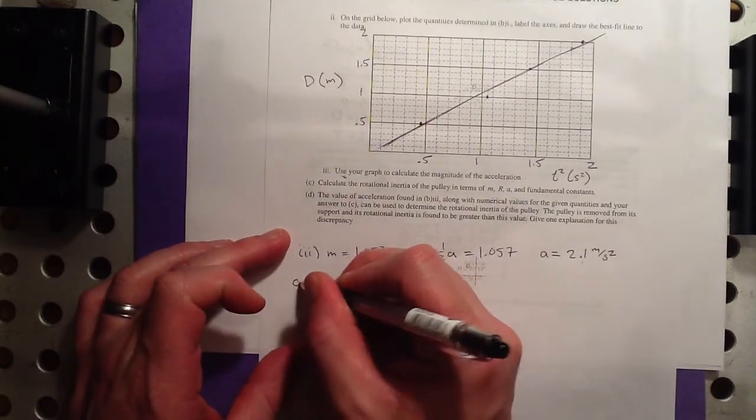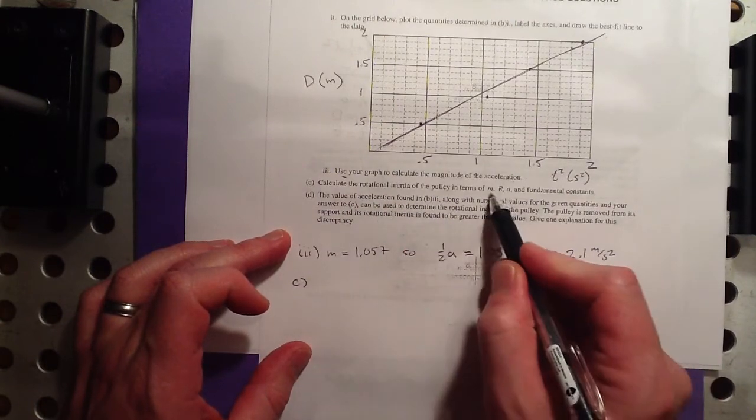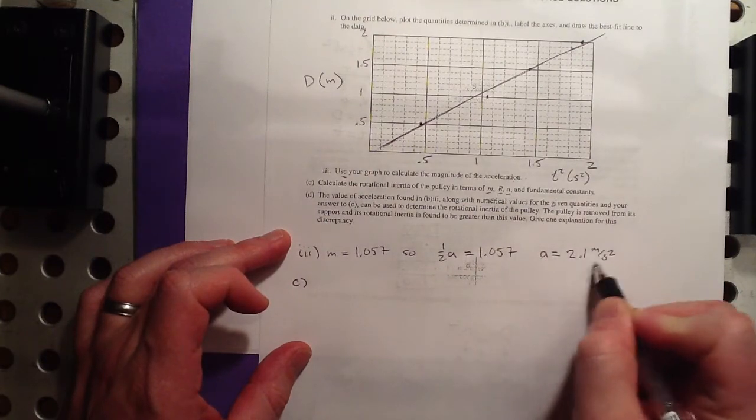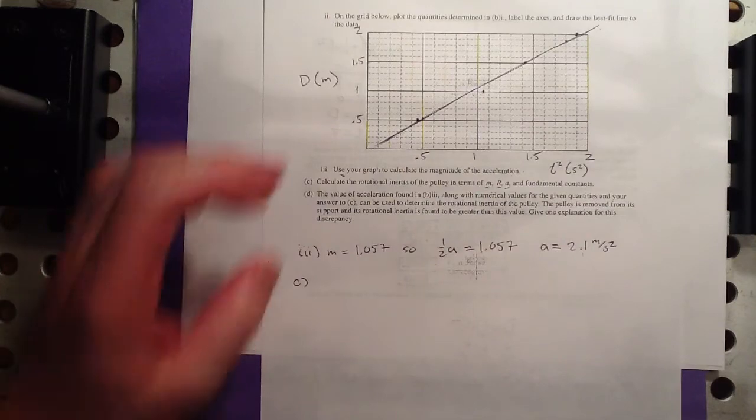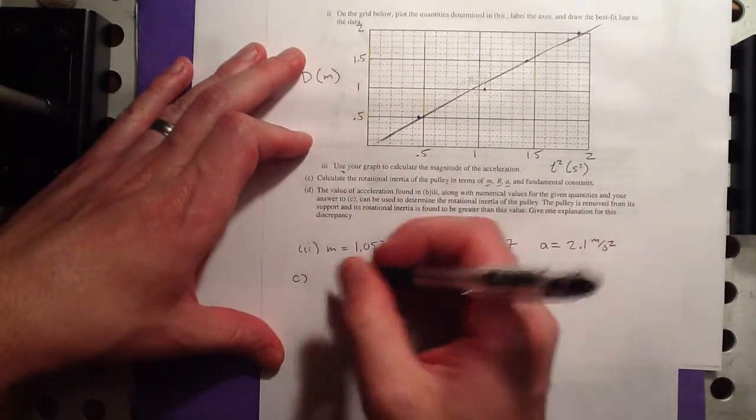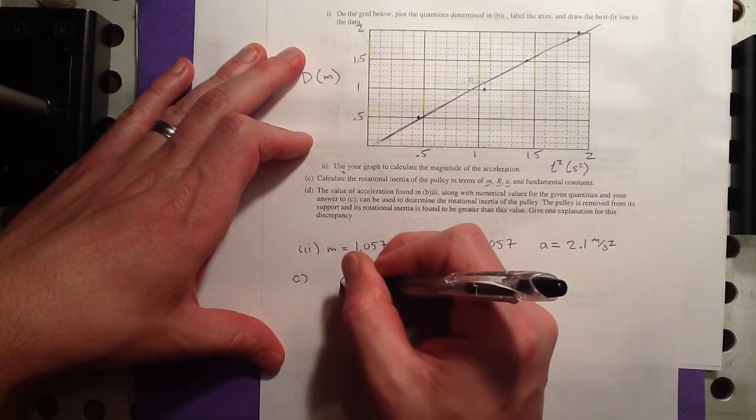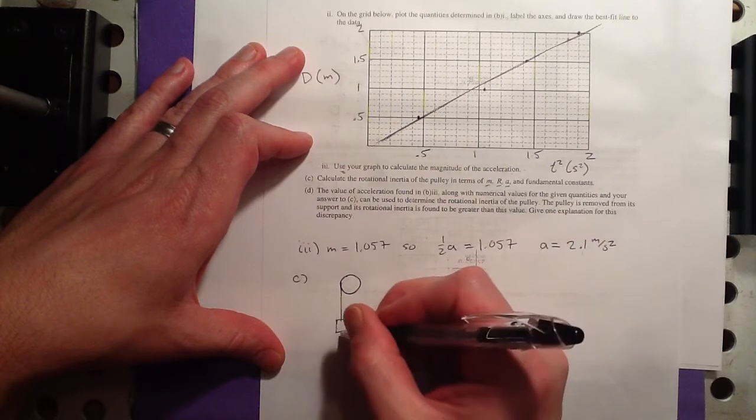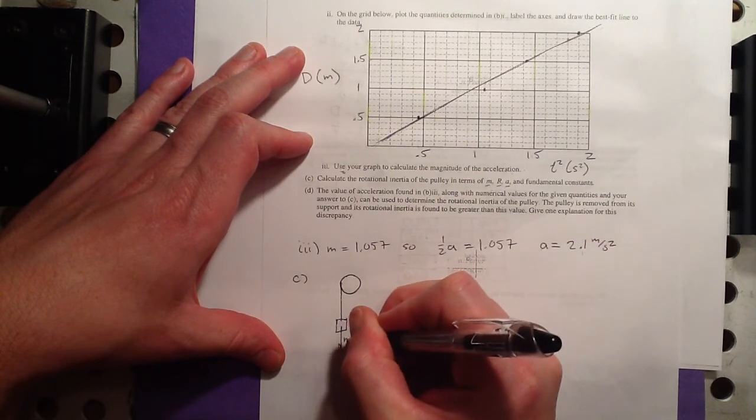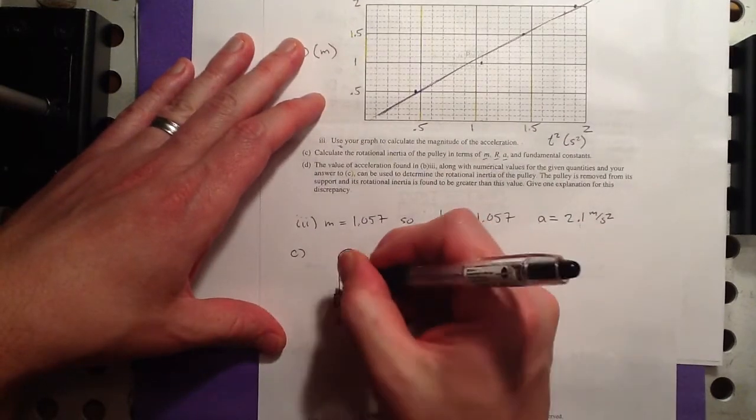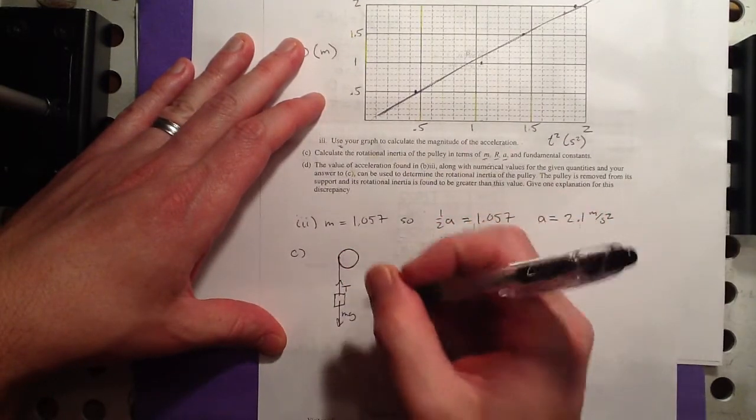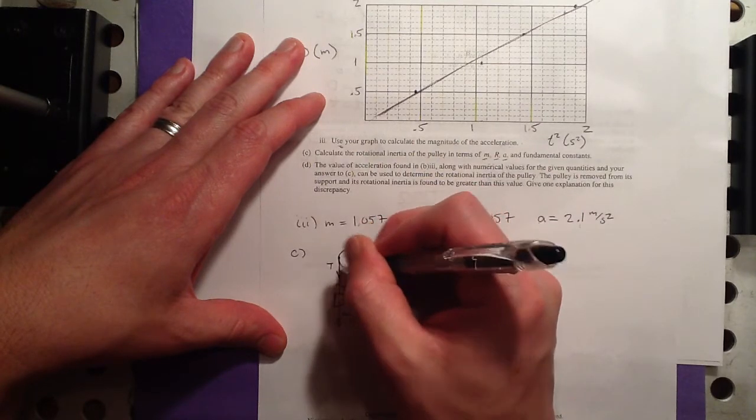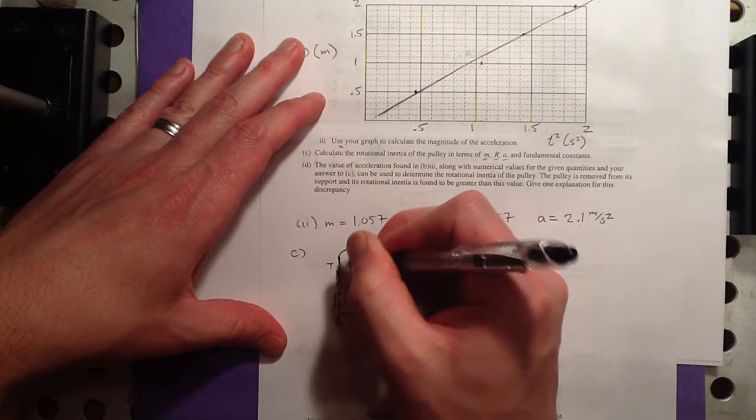Now we want to calculate the rotational inertia of the pulley in terms of M, R, A, which we have, in fundamental constants. And I think they don't want us to actually plug in that value, at least not yet. So, let's see, let me draw a diagram here. On this block, there are two forces acting, Mg, the weight of the block, and tension. And here, the torque acting on the pulley is also T, right, because the tension is the tension.